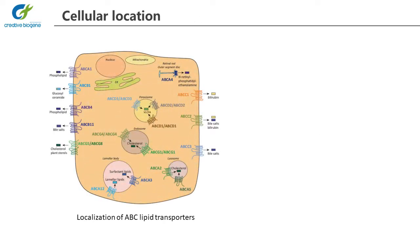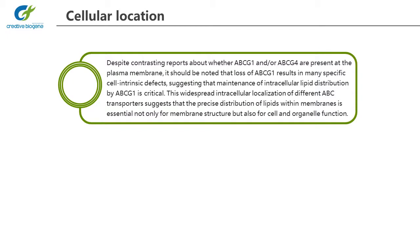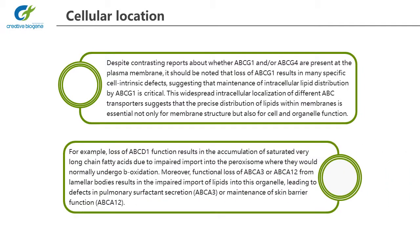Cellular location. 20 of the 48 human ABC transporters are thought to transport lipids or lipid-related compounds. Approximately half of them are localized to intracellular organelles such as peroxisomes, lysosomes, lamellar bodies, and endosomes. Despite contrasting reports about whether ABCG1 or ABCG4 are present at the plasma membrane, it should be noted that loss of ABCG1 results in many specific cell intrinsic defects, suggesting that maintenance of intracellular lipid distribution by ABCG1 is critical. This widespread intracellular localization of different ABC transporters suggests that the precise distribution of lipids within membranes is essential not only for membrane structure but also for cell and organelle function. For example, loss of ABCG1 function results in the accumulation of saturated very long-chain fatty acids due to impaired import into the peroxysome where they would normally undergo beta-oxidation.